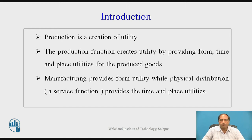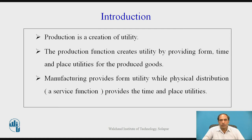Let us take a simple example. Any material in any form has some utility, some value. If I change the features of a particular material item or service into another better option, then I have done some process on it, and that process may be either a service operation or a production operation. Production has been defined as a step-by-step conversion of one form of material into another so as to create or enhance the utility. The material already has some sort of utility, and we want to enhance it or create it through a particular transformation process.